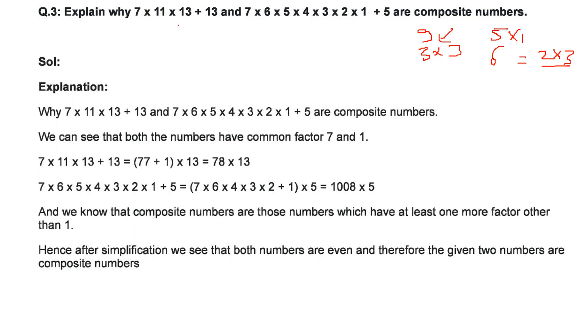So how these 2 numbers are composite number? This is 7 into 11 into 13 plus 13. So let us take 13 outside. So what do we get? We get 7 into 11 inside. So that is 77. If you take 13 from here, you get 1. So this is 13 into 78. So it is a multiplication of 2 numbers. It is a composite number.